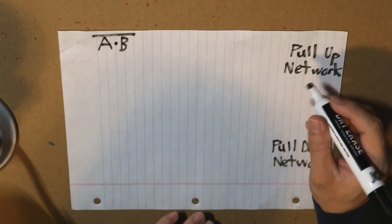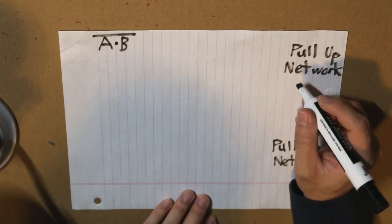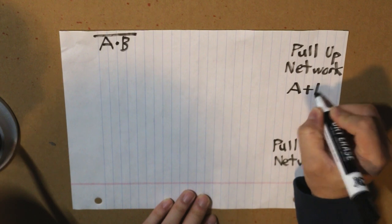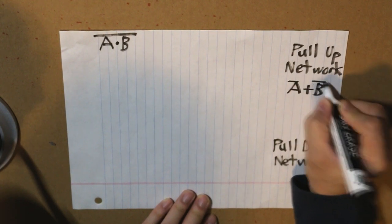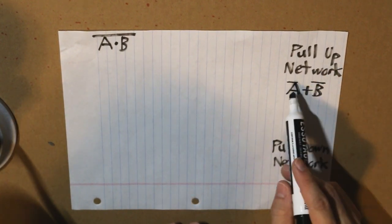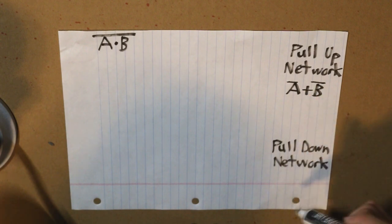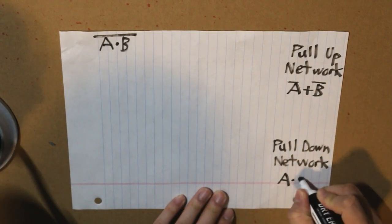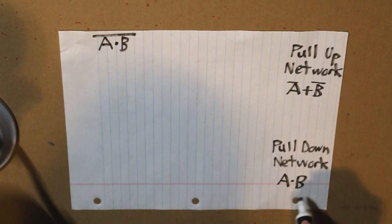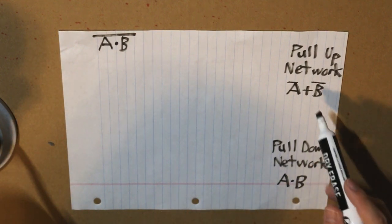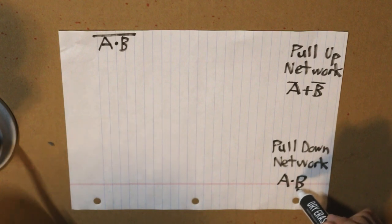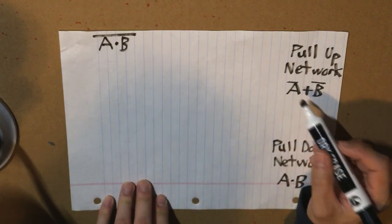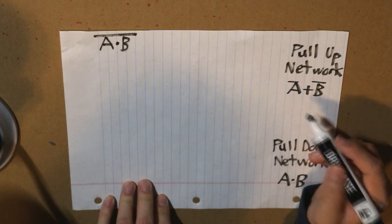This is our equivalent of our pull-up network. Our pull-down network would be just simply A dot B. Now that we've got our equations, let's draw it out. So we have A inverse.